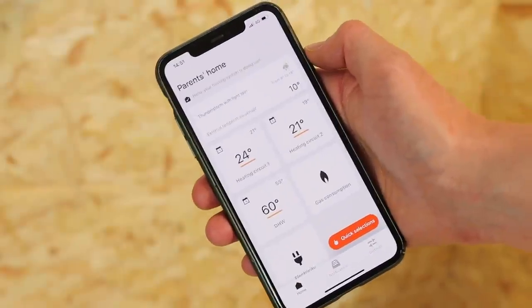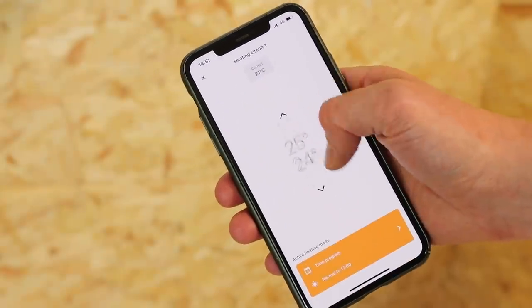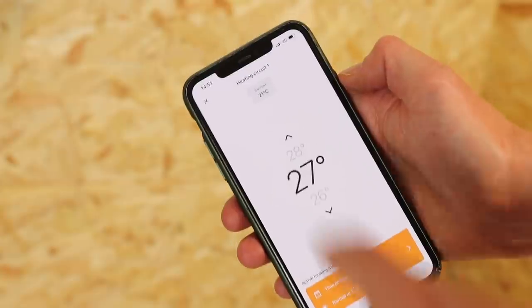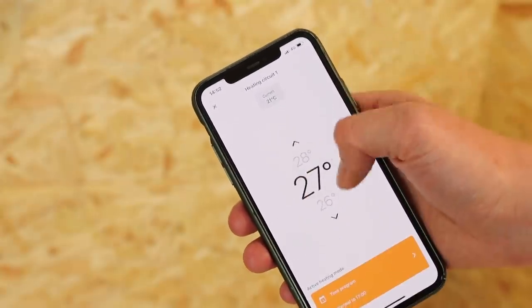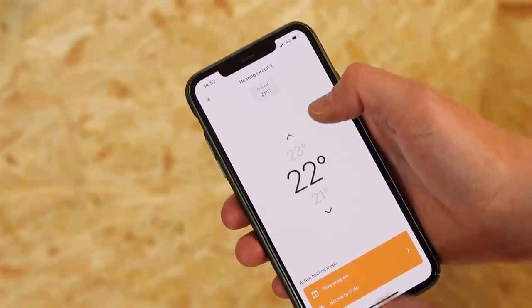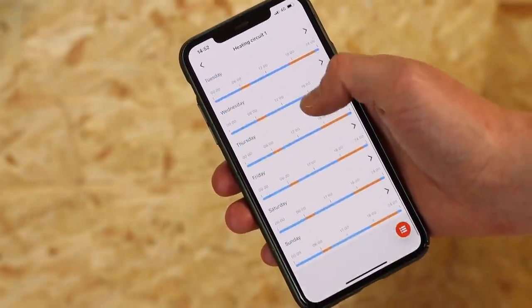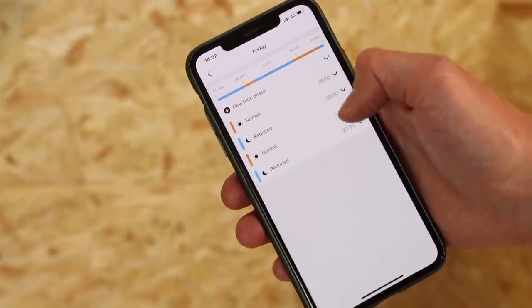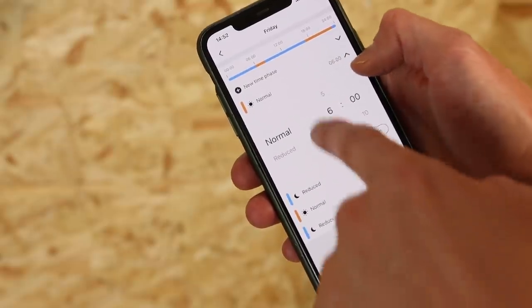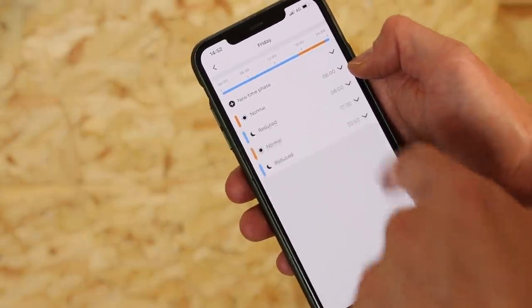So on the home screen of the app, you've got different sections. The first one we're clicking into here allows you to adjust the temperature that you want the heating to be. At the top of the screen, it displays the current heating temperature. There's also options to set different schedules within the application. You can set different times at different temperatures on different days.